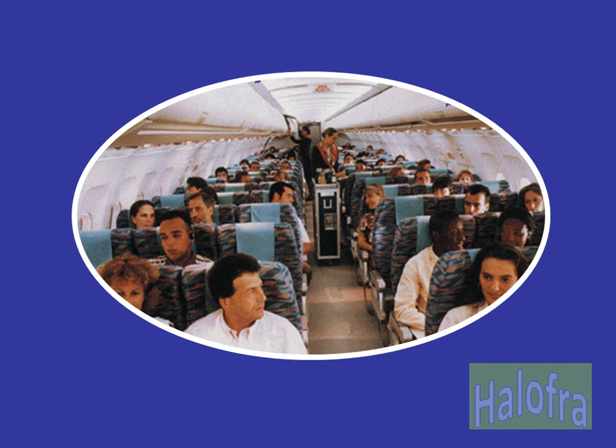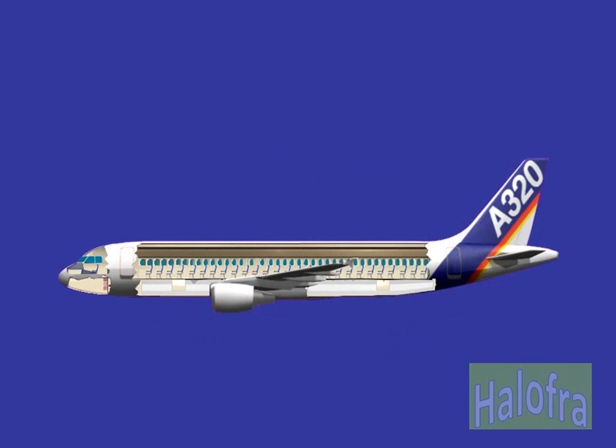The pressurization system on the A320 family normally operates automatically to adjust the cabin altitude and rate of change of altitude to ensure maximum passenger comfort and safety. The pressurized areas are the cockpit, the avionics bay, the cabin and the cargo compartments.